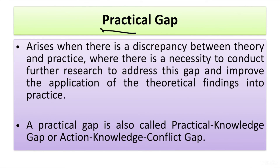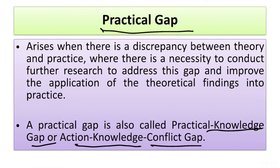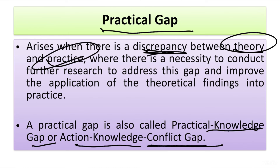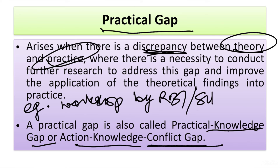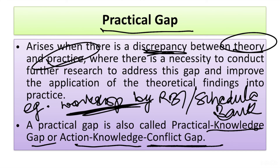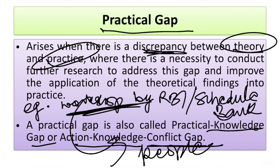The last gap is the practical gap, also known as the practical knowledge gap or knowledge-action conflict gap. This type of gap arises when there is a discrepancy between theory and practice. For example, if RBI or any other scheduled bank organizes a workshop, you can study the impact of such a workshop on people — that is the practical gap, exploring the practical implications.